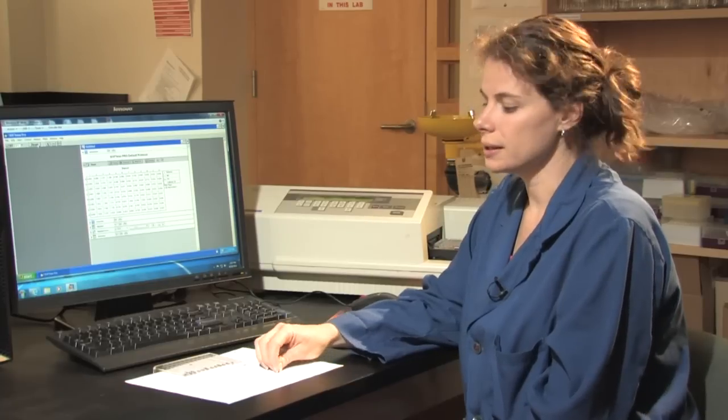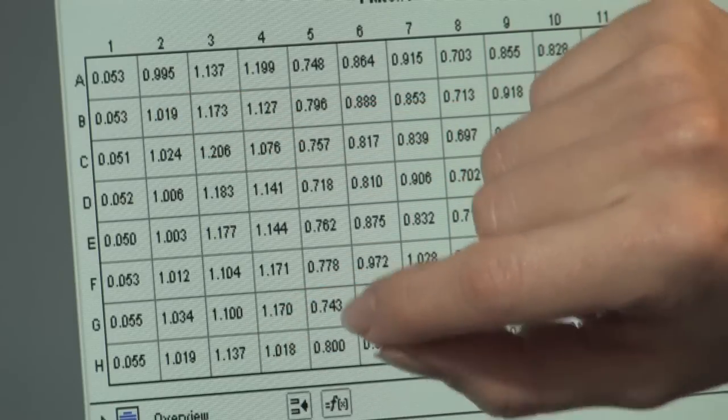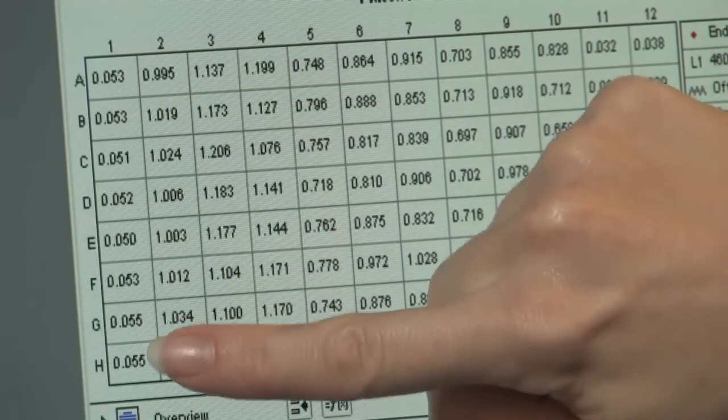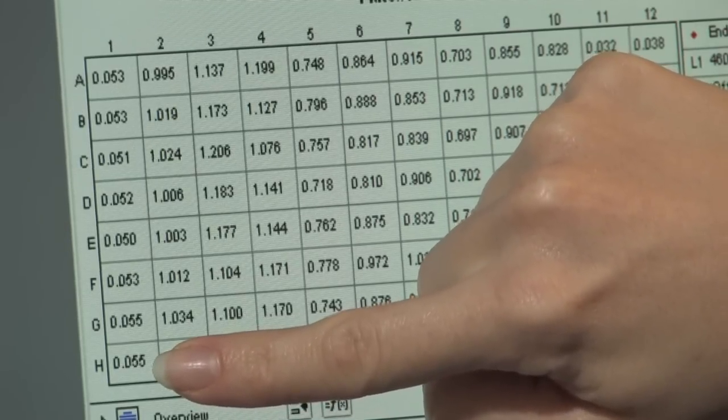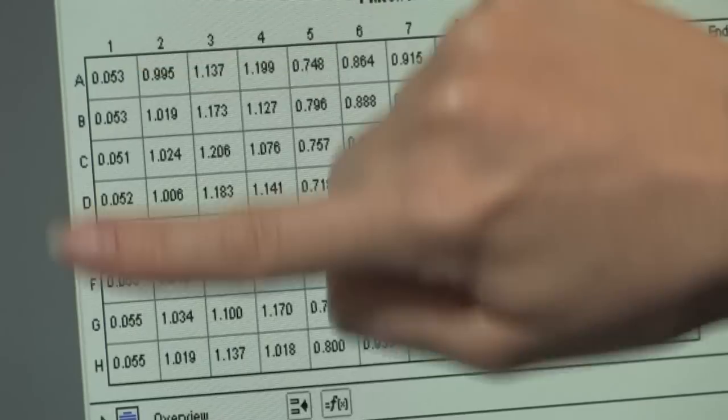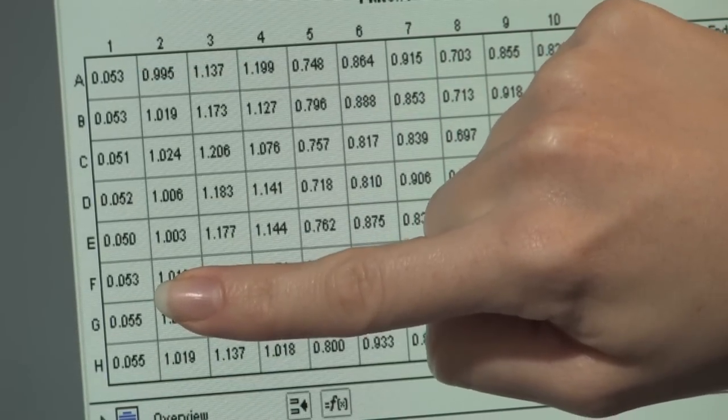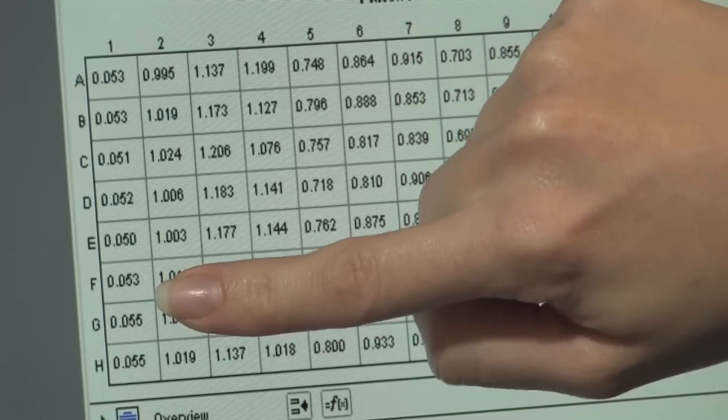So what the plate reader's done has used a light at a specific wavelength to read the color of each well. It's come back with a set of numbers representing the color change within the well. So for my first row, which represents the negative control or the DOPA with the soil buffer, my numbers are all at about .05. This means that there's very little color in those wells, which is what we expected because we didn't want the DOPA to change color.